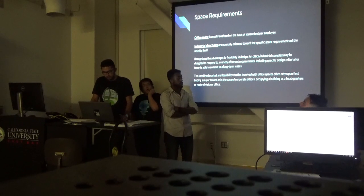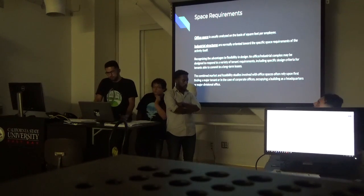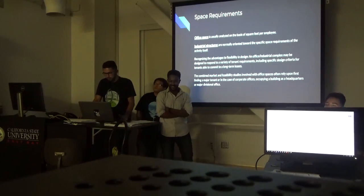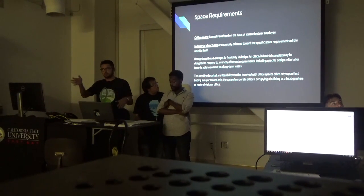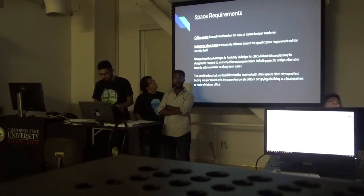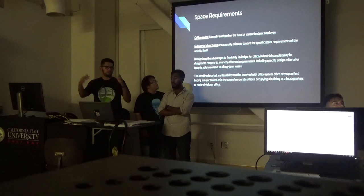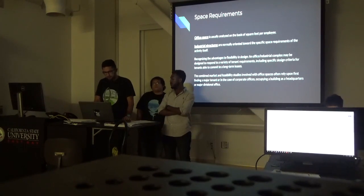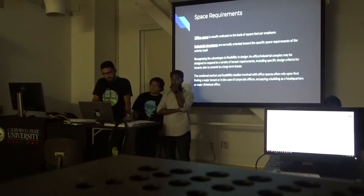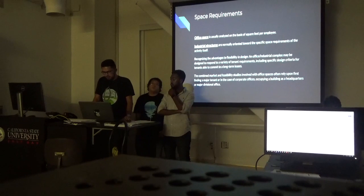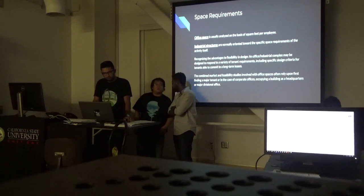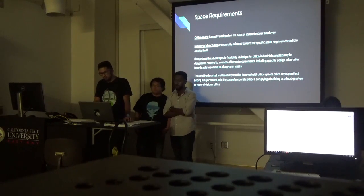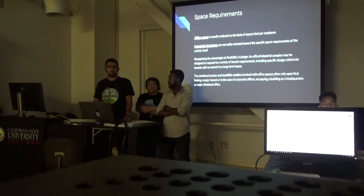Regarding space requirements: office space is usually analyzed on the basis of square feet per employee, while industrial structures are oriented toward the specific space requirements for the activity itself. In an office you see a lot of divisions and compartments, whereas industrial space is a big open area for people to do their work. Office-industrial complexes can be designed to respond to a variety of tenant requirements, including specific design criteria for tenants committing to long-term leasing. Market and feasibility studies for office spaces often rely on first hiring a major tenant, or in the case of corporate offices, occupying a building as a headquarters or major division office, although this is sometimes hard to do.